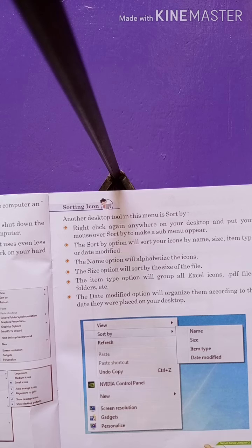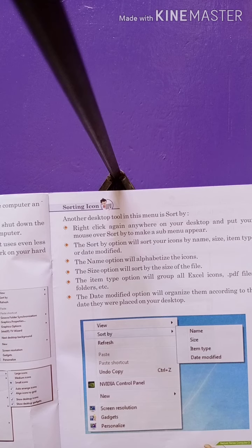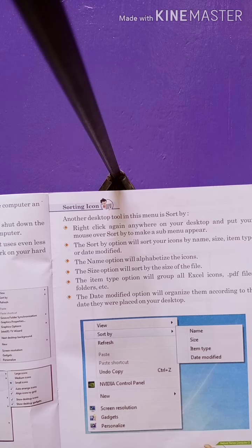Sorting icons — another desktop tool is the sort menu. Right-click anywhere on the desktop and put your mouse over 'Sort by' to make the submenu appear. The sort options will sort your icons by name, size, item type, or date modified. The Name option will alphabetize the icons — अगर आप चाहते हैं कि menu alphabetically arranged हो तो आप वो कर सकते हैं। The Item Type option will group all Excel icons, PDF files, and folders together।